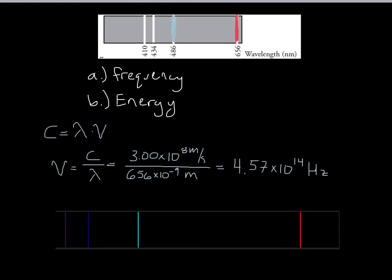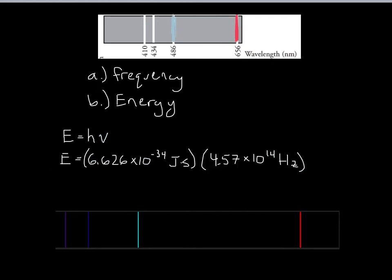That's a very fast frequency — every second, a crest of that wave would pass through a particular point 4.57 times 10 to the 14th times. Then to solve for energy, we take Planck's constant and multiply it by the frequency for this particular wave that we just calculated. We get the energy in joules: it comes out to be 3.03 times 10 to the negative 19th joules.